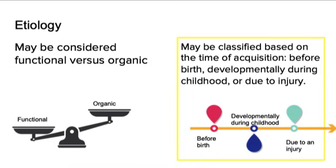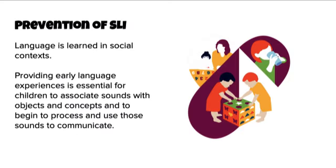In addition to classifying a speech and language impairment as functional or organic, we can also classify them based on the time of acquisition: either before birth, developmentally during childhood, or due to an injury. When it comes to prevention, language is learned in a social context and has developed within the context of social relationships in virtually every known culture. Providing early language experiences is essential for children to associate sounds with objects and concepts and begin to process and use those sounds to communicate.